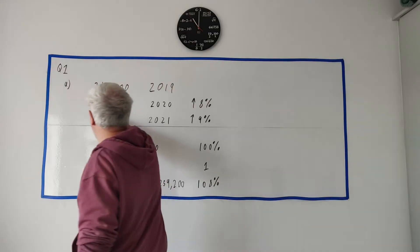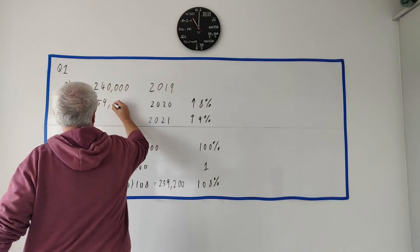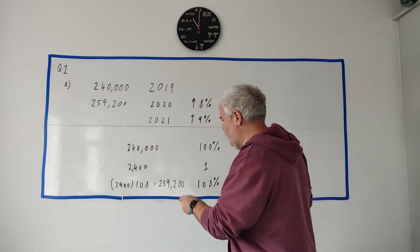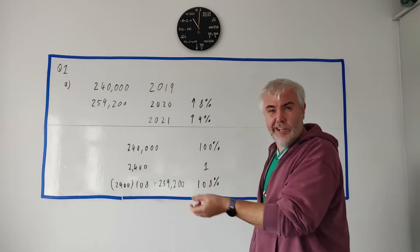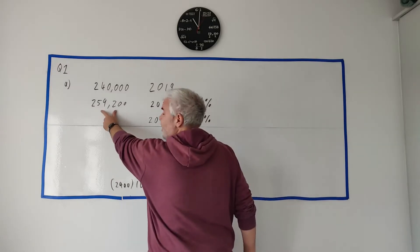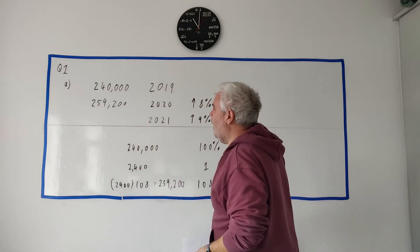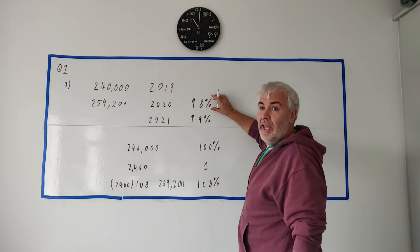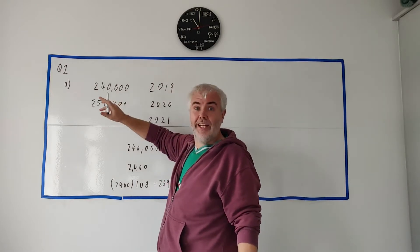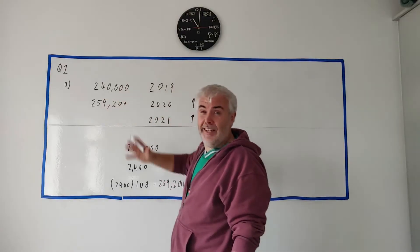It is 259,200 euro. Make sure the answer makes sense. If you've got an answer like 210,000, it has to make sense. The number went up 8% so the number here should be close to this but a little higher. And that looks about right.